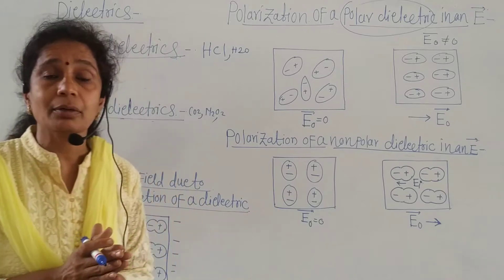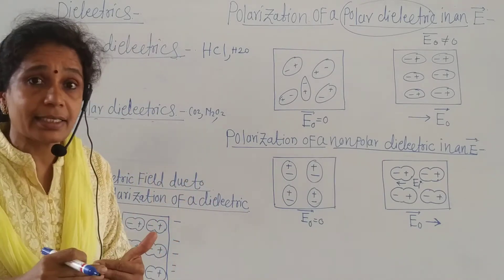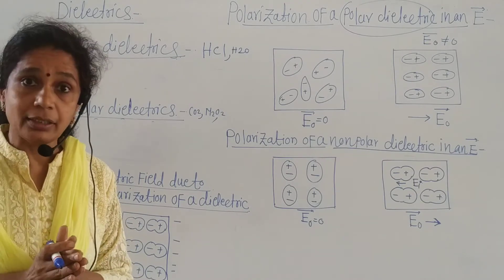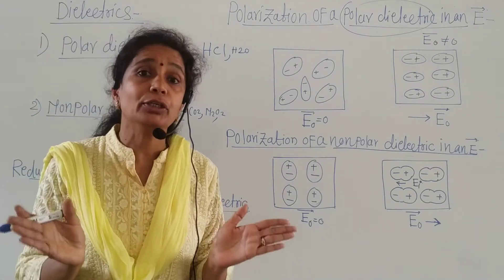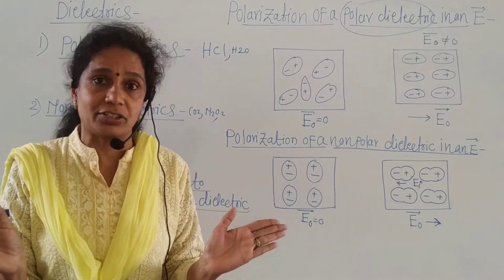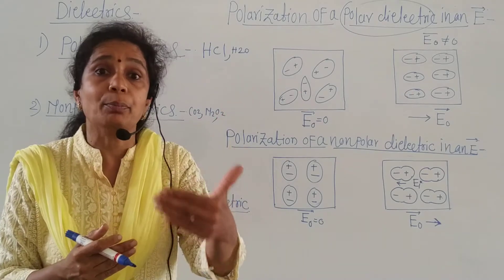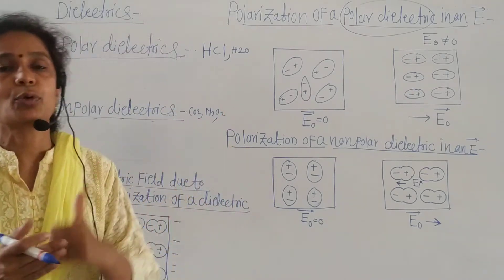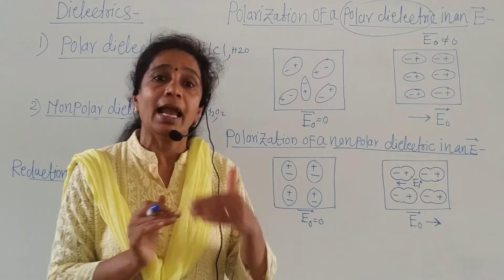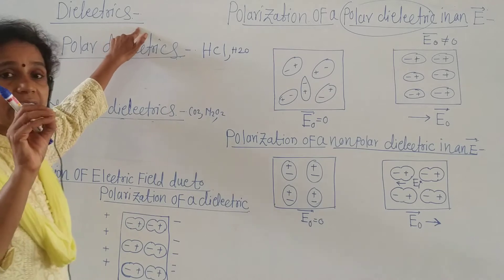The electric current is not passed through them. But when a dielectric is placed in an external field, then the positive and the negative charges are displaced in opposite directions, and that molecule develops a dipole moment. This process is called the polarization of the material, and such materials are called dielectrics.